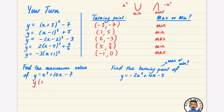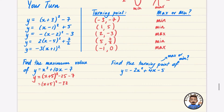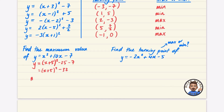For x² + 10x - 7: completing the square gives (x + 5)² - 25 - 7 = (x + 5)² - 32. The question says 'maximum' but this is actually a minimum — I'll correct this in the original PDF. The minimum value is -32, occurring when x = -5.